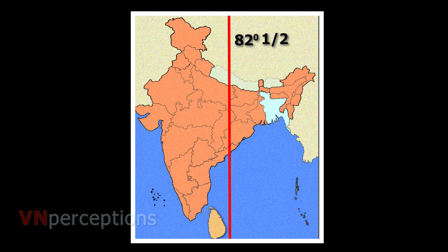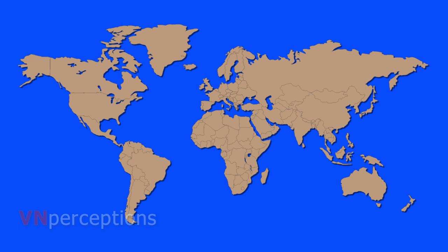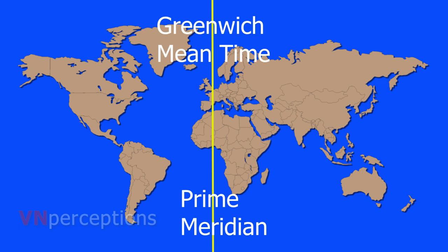Different countries have different standard times. This would cause confusion. So in order to maintain international uniformity, one uniform time corresponding to the prime meridian is adopted by all countries. This is called the Greenwich Mean Time or GMT.